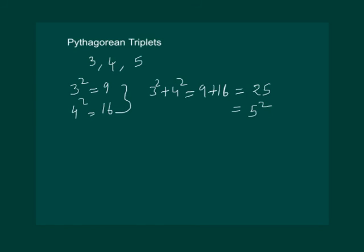That means sum of the square of 2 numbers is equal to the square of 3rd number. Then we call the collection of numbers 3, 4 and 5 as Pythagorean triplets. Similarly, let us consider the numbers 6, 8 and 10. We know that 6 square is 36, 8 square is 64.